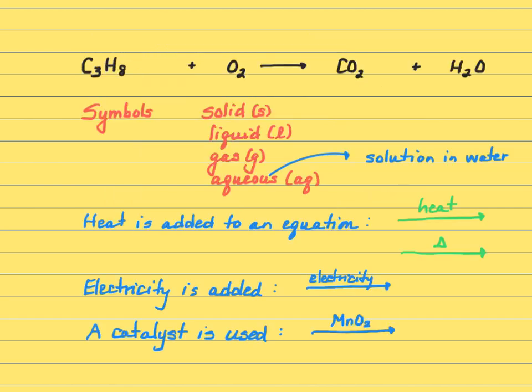So we're going to take that skeleton equation and we're going to start adding some symbols. Some symbols we need to know are, if you have a solid, you put an S. Liquid is L. We knew that propane, it said liquid propane, so that's going to be an L. G is for gas. We know that oxygen is a gas. It said that carbon dioxide was a gas, and it said steam, which is H2O gas. Another one we use in a little bit is aqueous. That means something that's dissolved in water.